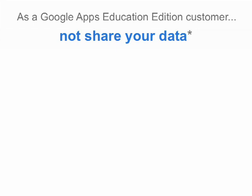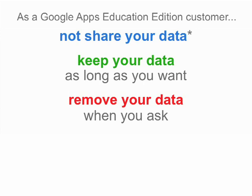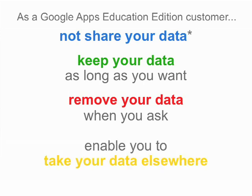So the question is really about privacy — what is Google doing with your data? I'll say four things to you about privacy that are really commitments from Google. First, we won't share your data. Second, we'll keep your data as long as you like — we're not going to delete it because you haven't accessed it in a while. On the other hand, if you want to remove your data, we'll remove it from all of our active servers. And finally, we'll let you take your data with you wherever you want to go, whether that means exporting a document to Word or Excel, or taking all of your mail and calendar data with you to another service.